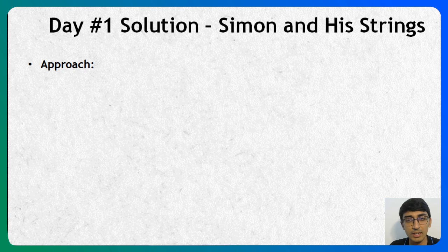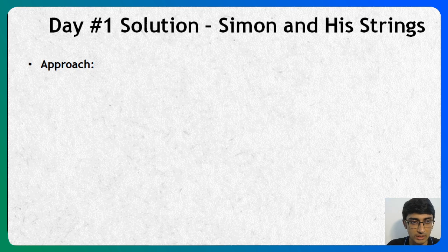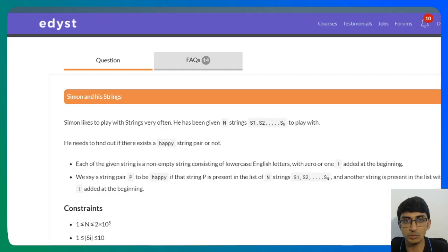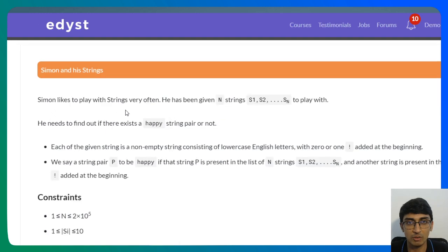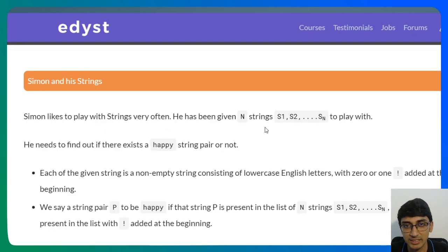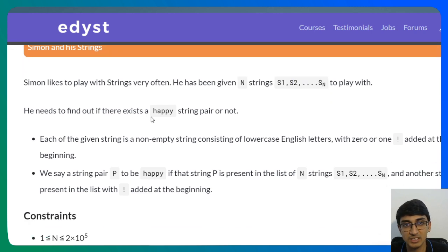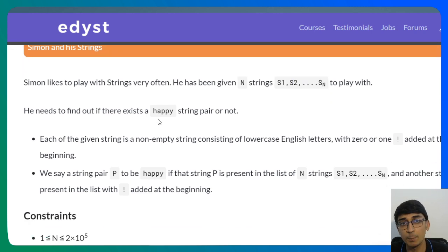From tomorrow onwards we'll probably just look at pseudo code, and the actual code will be available on the platform itself. So the question says: Simon likes to play with his strings. He has been given N strings S1 all the way up to SN to play with, and he needs to find out if there exists a happy string pair or not.